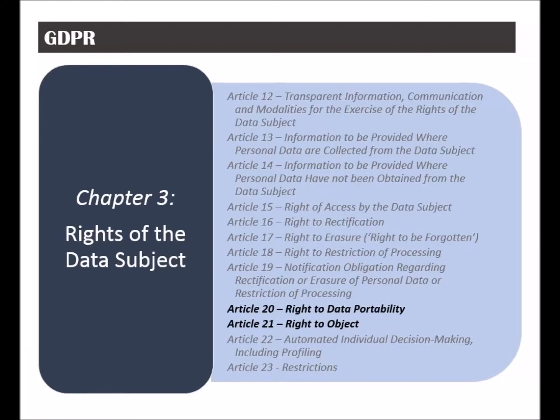The 9th and 10th articles of the 3rd chapter, Rights of the Data Subject, No. 20 and 21 overall, are called Right to Data Portability and Right to Object. These articles discuss the data owner's right to control his data movement, and his right to object and stop the processing of his data under certain circumstances.